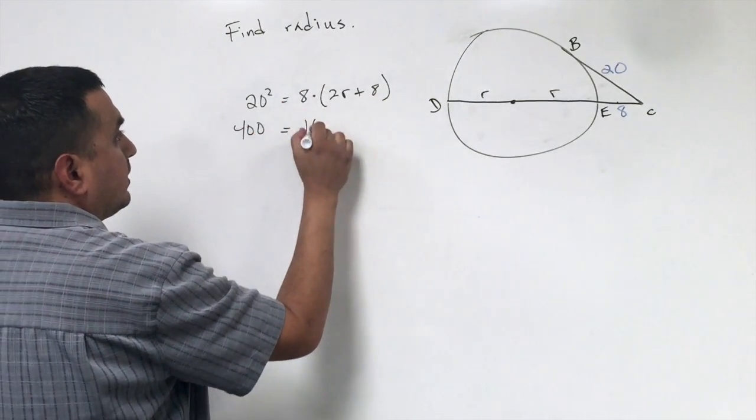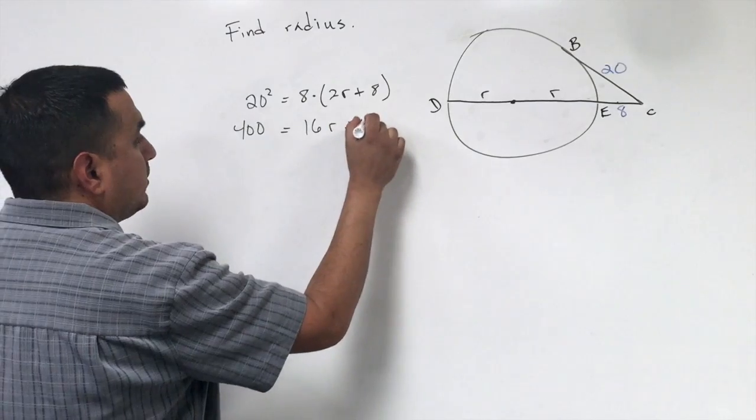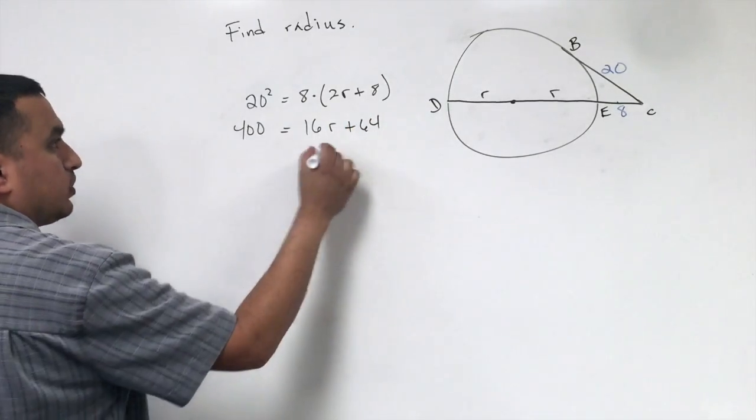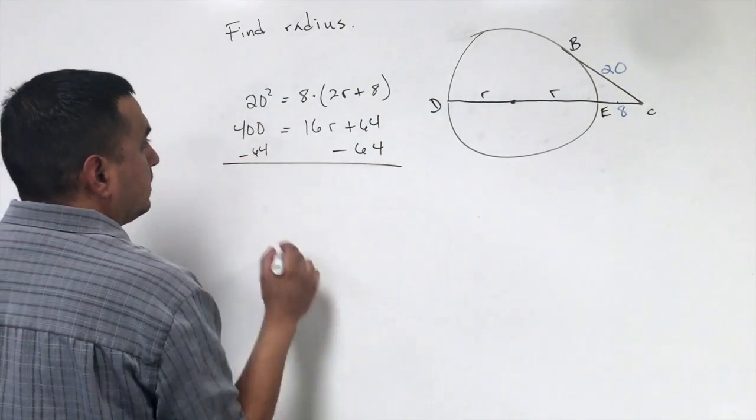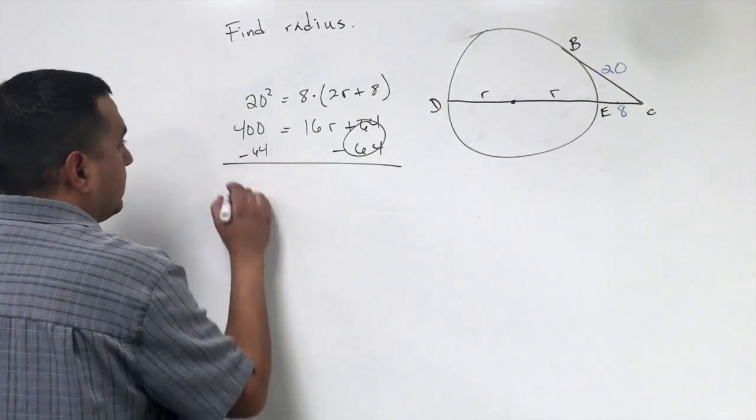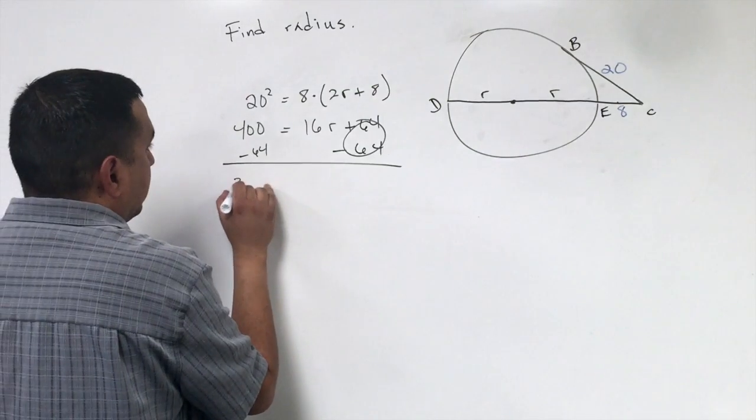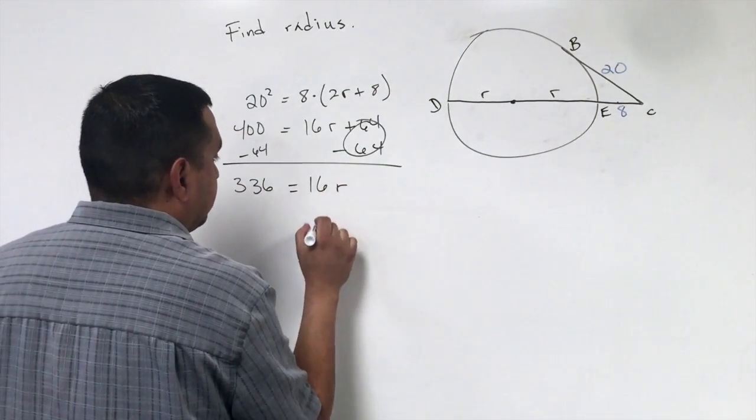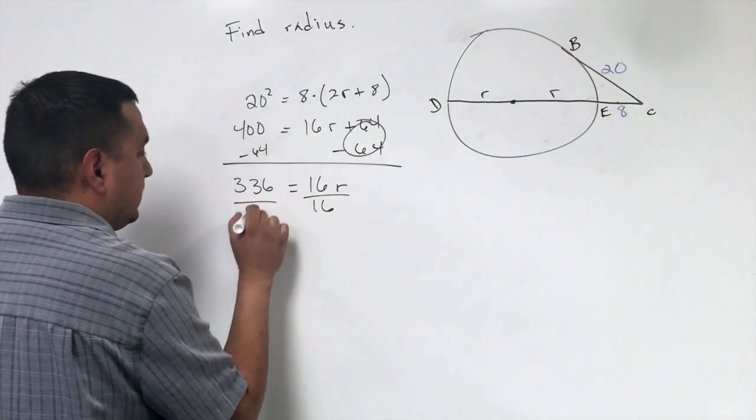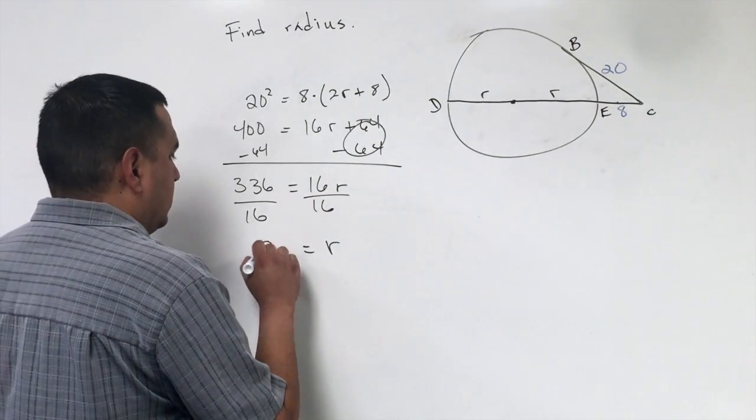Now 20 squared is 400. And if I distribute, I get 16R plus 64. So I have to subtract 64 from both sides. That goes to 0. This is going to be 336 is equal to 16R. And if I divide by 16, it's going to be 21.